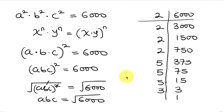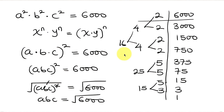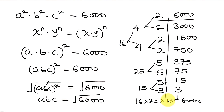Now we pair the factors in twos. Pairing the first two 2s: 2 times 2 gives 4. Pairing the next two 2s: 2 times 2 gives 4. Pairing the two 5s: 5 times 5 gives 25. The remaining factors are 5 times 3, giving 15. The two 4s pair to give 16, so 16 times 25 times 15 equals 6000.